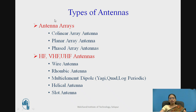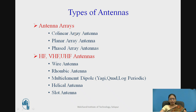Let us look at the different types of antennas. There are numerous types of antennas. Each individual antenna has its own gain and directivity. There is also the category of antenna array, where similar or dissimilar antennas are stacked together to form an array, increasing the antenna gain and directivity. Antenna arrays are further categorized as collinear array, planar array, and phased array.